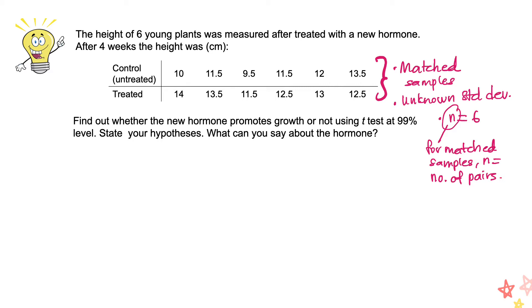The first step here is to set the hypothesis. So the null hypothesis can be written as the mu of the height of the control sample is equal to the mu of the height of the treated samples.